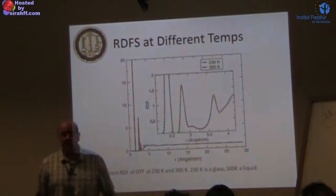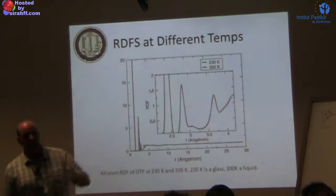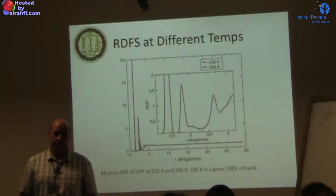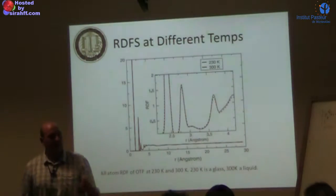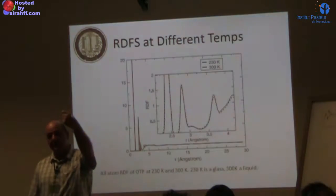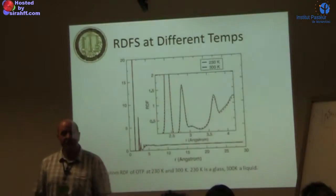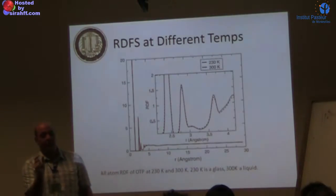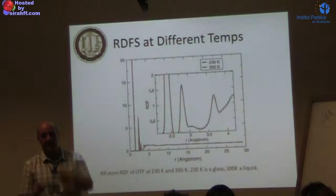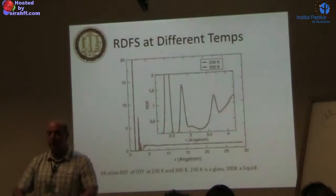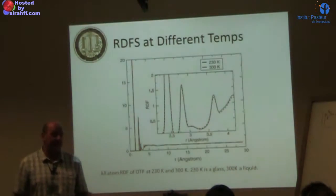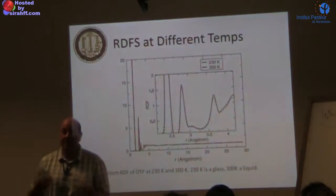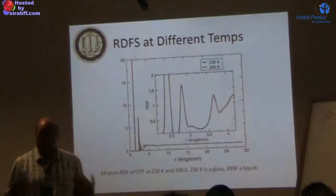A glass is effectively a frozen liquid. We can actually see this in hundreds-of-years-old glass in Europe — if you measure the thickness of stained glass windows in Chartres, the bottom is a few millimeters thicker than the top because the glass has flowed downward over centuries. A glass is a liquid, but an extremely slow one.